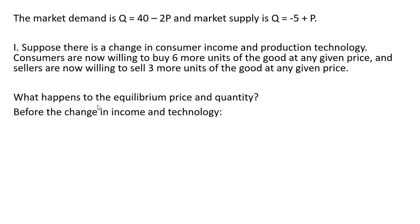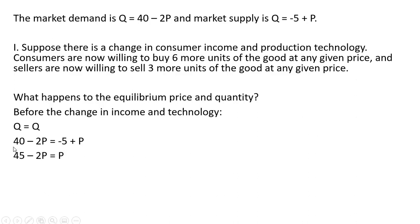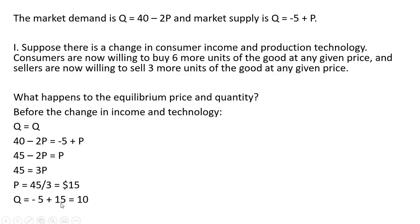Let's first look at equilibrium before the change in income and technology. We're going to set the quantity demanded equal to the quantity supplied: 40 minus 2p equals minus 5 plus p. Adding 5 to both sides, then adding 2p to both sides, and dividing through by 3, the equilibrium price is $15. Plugging $15 back into the supply equation, the equilibrium quantity is 10 units.